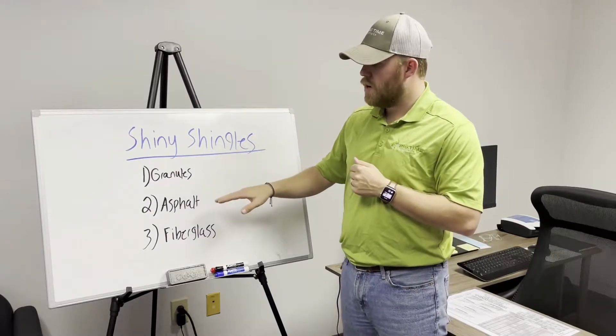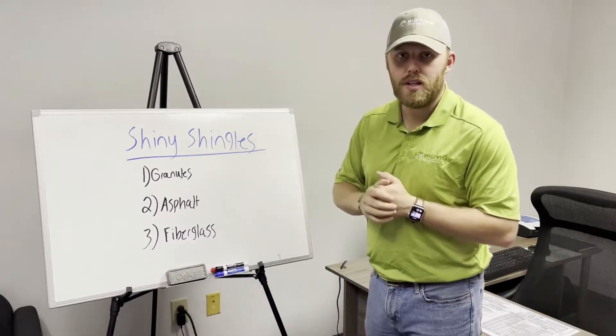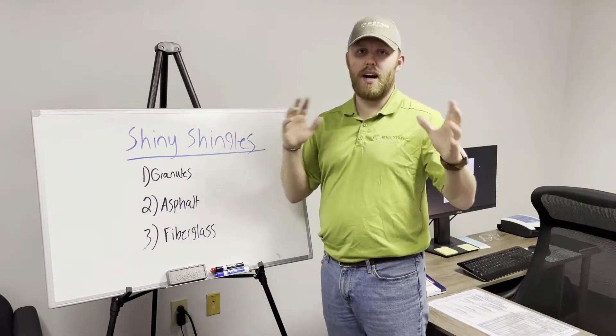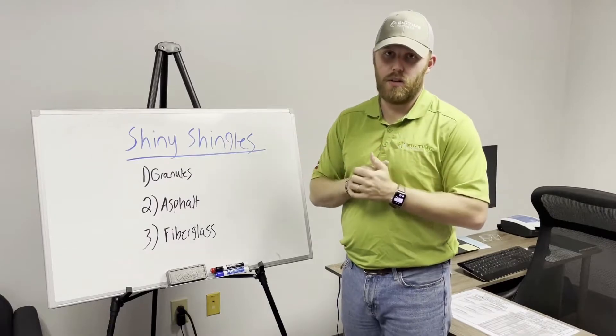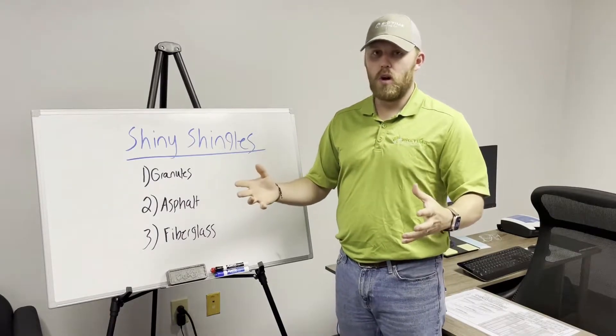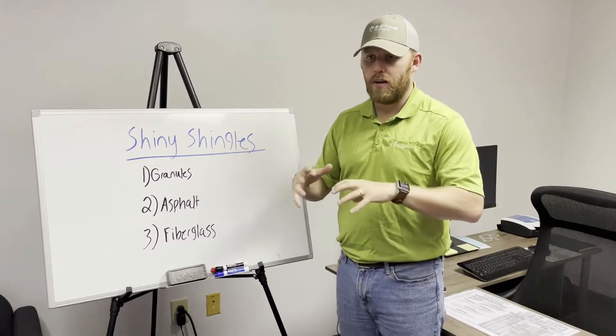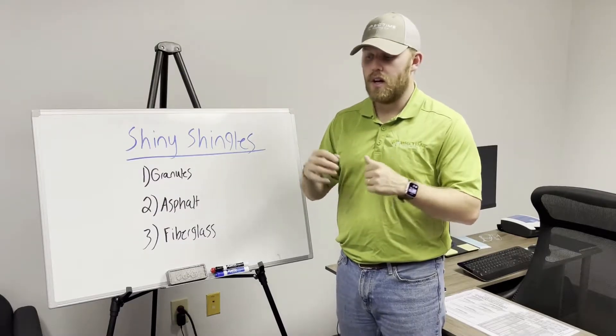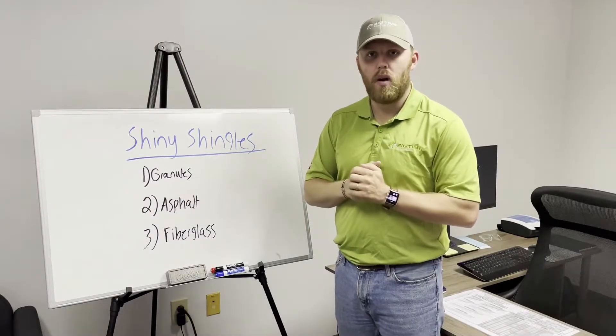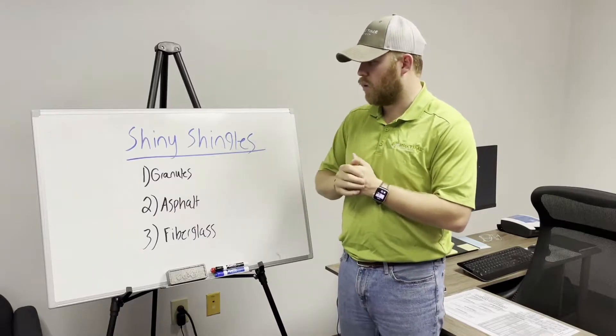But when the granulates fall out, now the asphalt underneath is exposed. Asphalt and UV light from the sun do not like each other. That's the same reason why roads get cracks in them and kind of wear down over time. You have to repave them because over time, the sun beats down on the asphalt and eats it away. It does the same thing with these shingles.